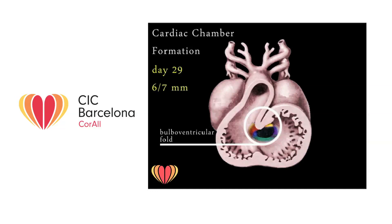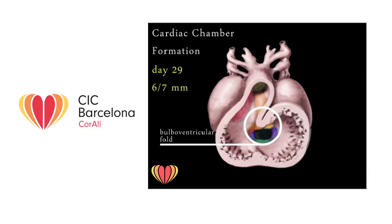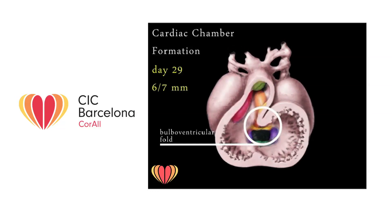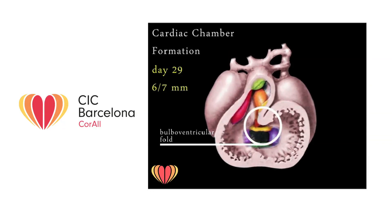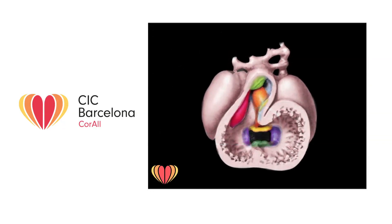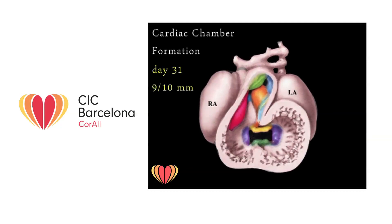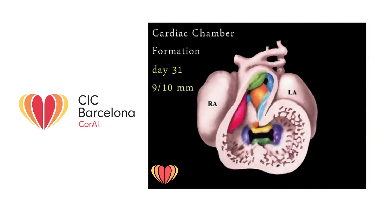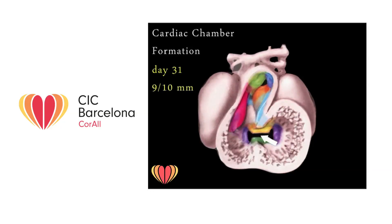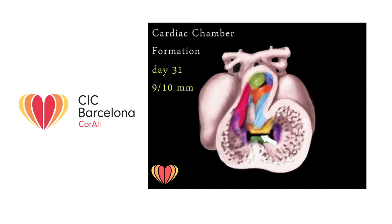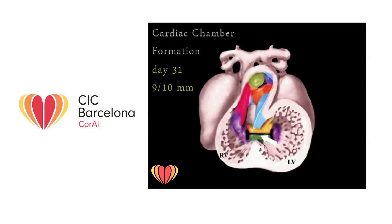At the same time, left and right atrium develop. We are in day 29 of pregnancy. The embryo measures 6 to 7 mm. In the next few days, the atrioventricular canal, the pathway between atria and ventricles, forms. In the meantime, both interatrial septum and interventricular septum develop. The interventricular septum and the bulboventricular fold fuse in order to separate the right and the left ventricles.